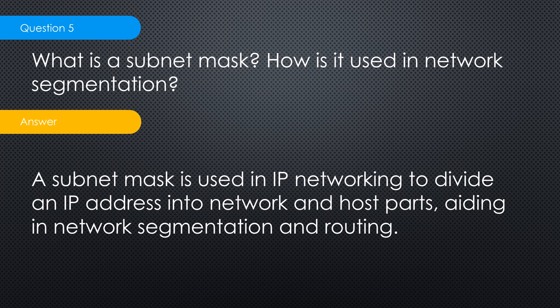Question five: what is a subnet mask and how is it used in network segmentation? The subnet mask is used in IP networking to divide an IP address into network and host portions, aiding in segmentation and routing. Learn how to subnet — basically for each segment you have one broadcast address and some reserved addresses. Subnetting allows you to allocate more efficiently than a default 256-address block. In networking with switches and routing, sometimes you just need one or two addresses.